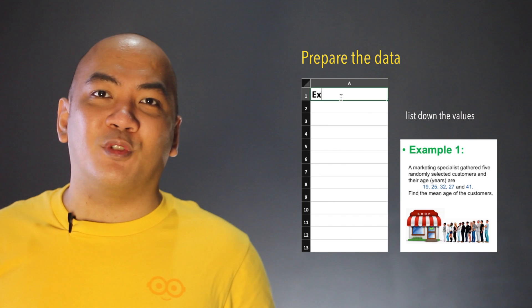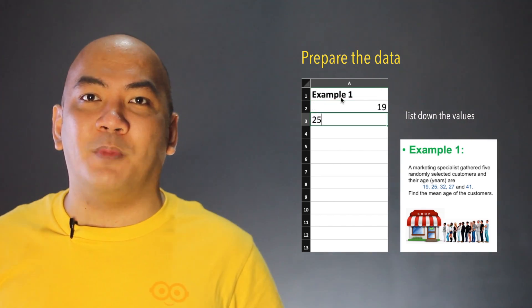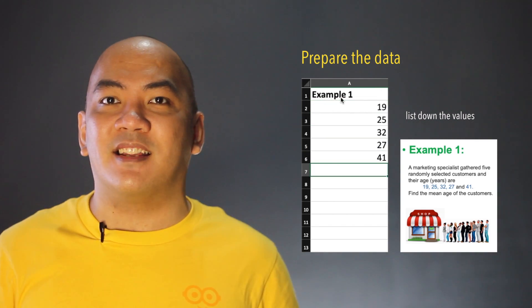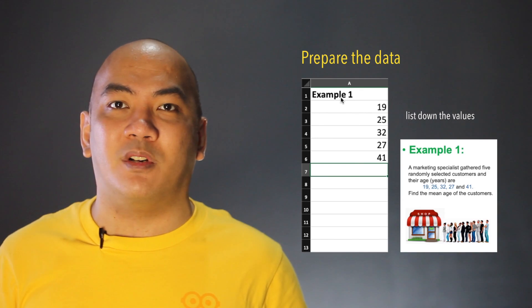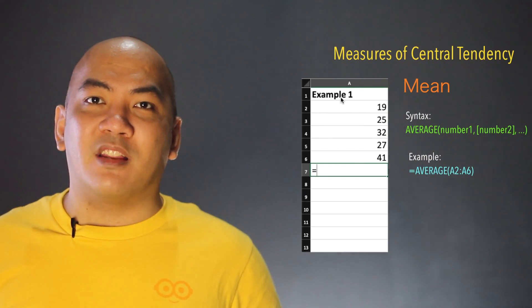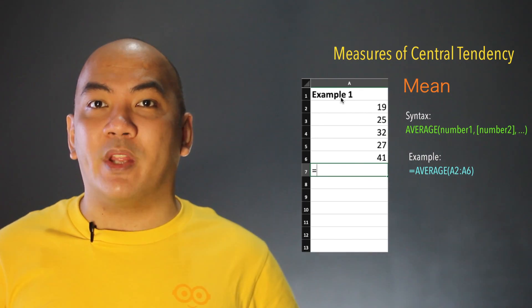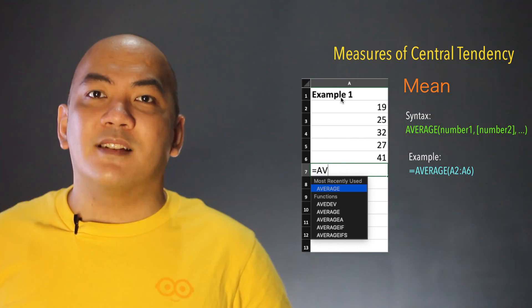The first thing you have to do is prepare the data to be analyzed. I have listed down the values from the previous example. To get the measures of central tendency, starting with the mean, make use of the AVERAGE function.